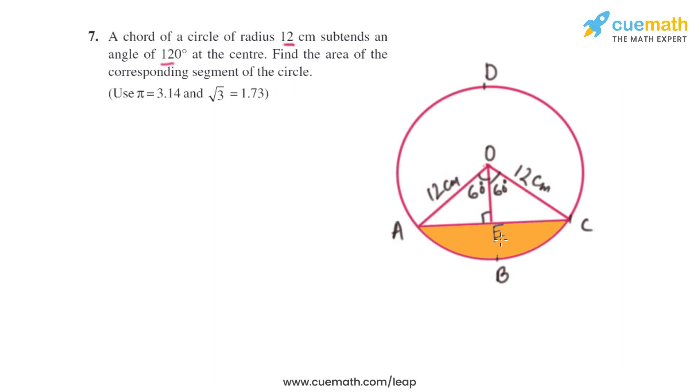We have to find the area of the segment that is in yellow. To find that, we will find the area of sector OABC and the area of triangle OAC, then subtract them.